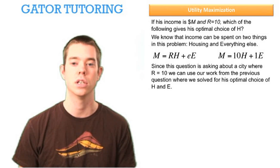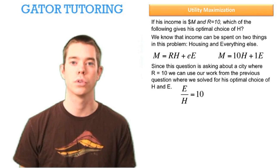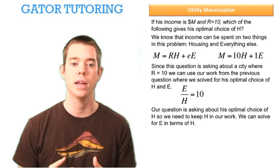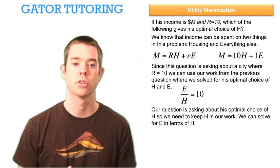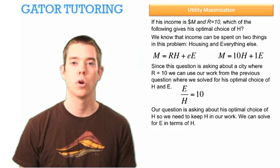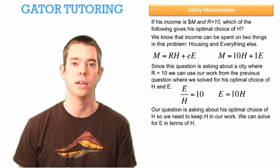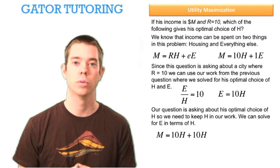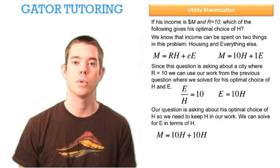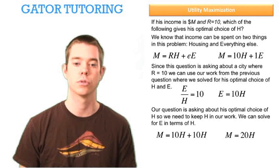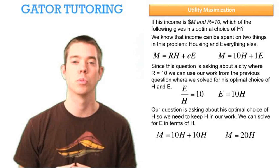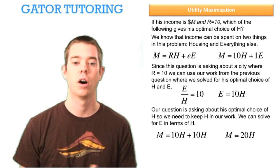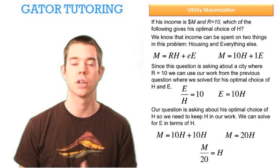We found that E divided by H equals 10, so we can solve for E in terms of H: E equals 10H. Going back to our income equation M equals 10H plus E, we substitute 10H in for E. Combining like terms gives M equals 20H. Since we're solving for H, we divide both sides by 20, giving us H equals M divided by 20 as his optimal choice of housing.